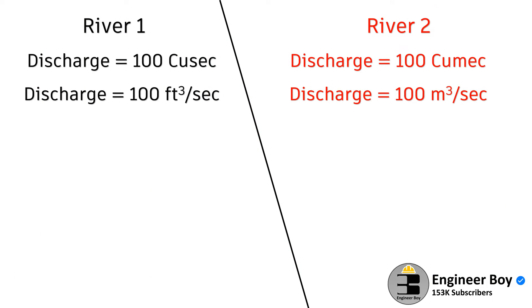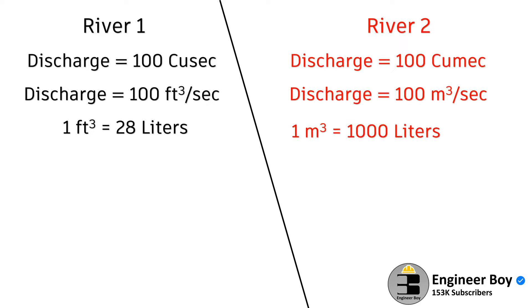If you are not a technical person, you may not understand terminologies like cubic feet and cubic meters. So you can also convert that into liters, because non-technical persons may understand liters. One cubic foot is just 28 liters, and one cubic meter equals 1000 liters. So now you can say River 1, which is 100 QSIC, means 100 times 28 — that's just 2800 liters per second.